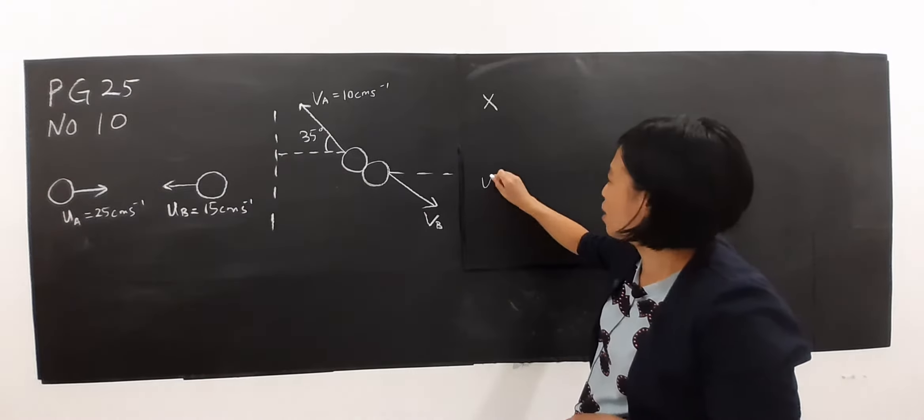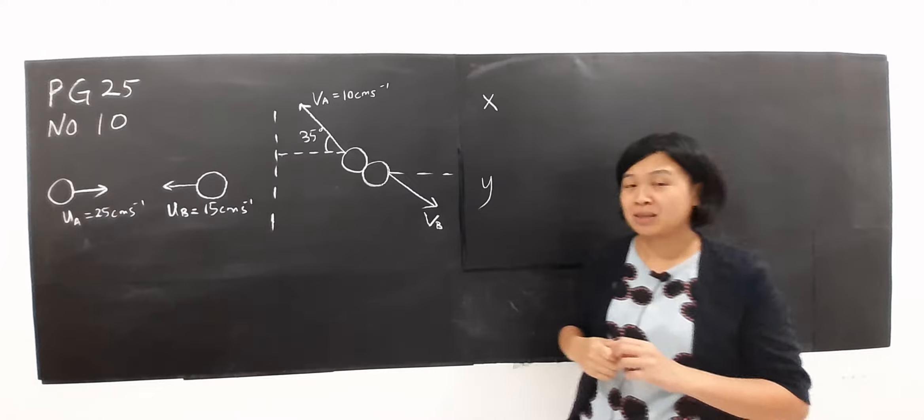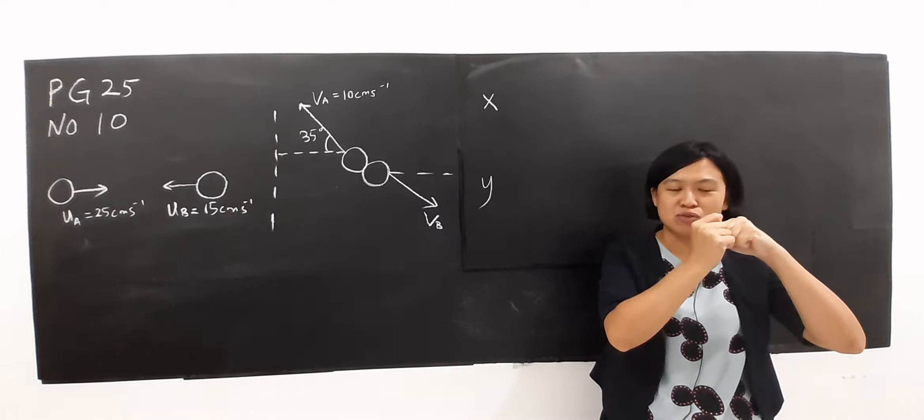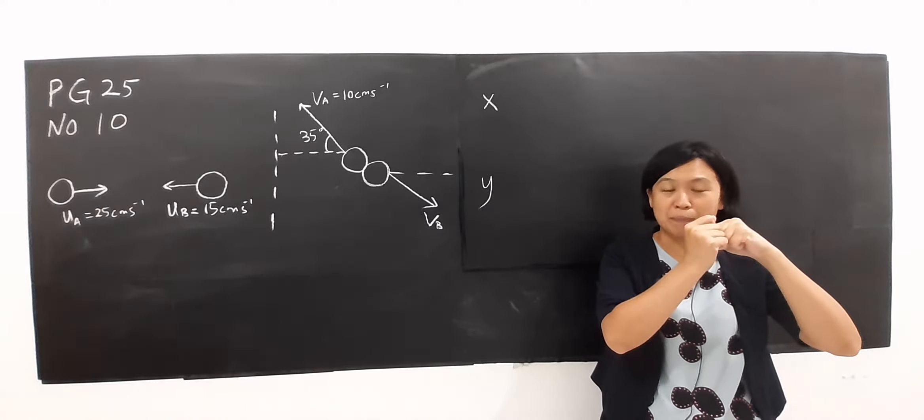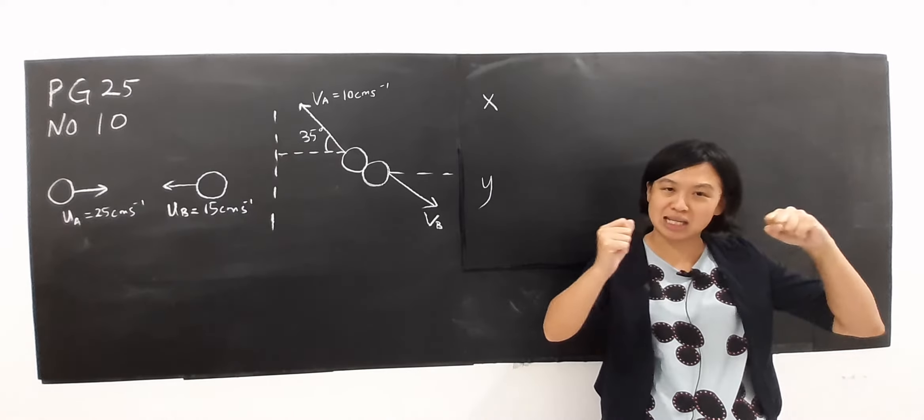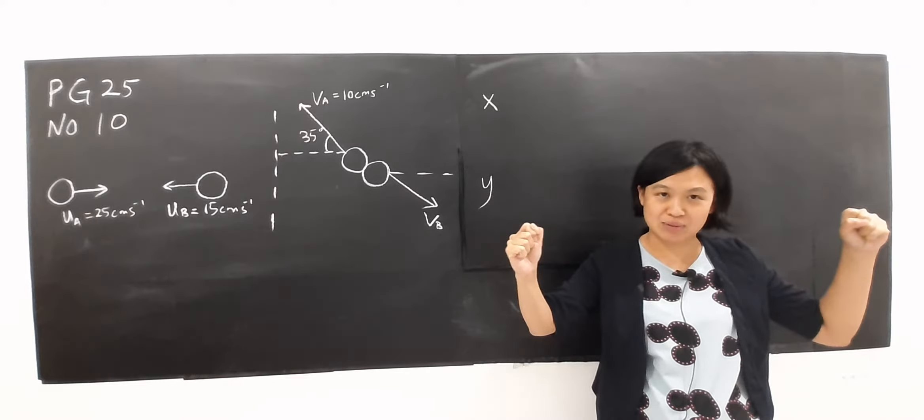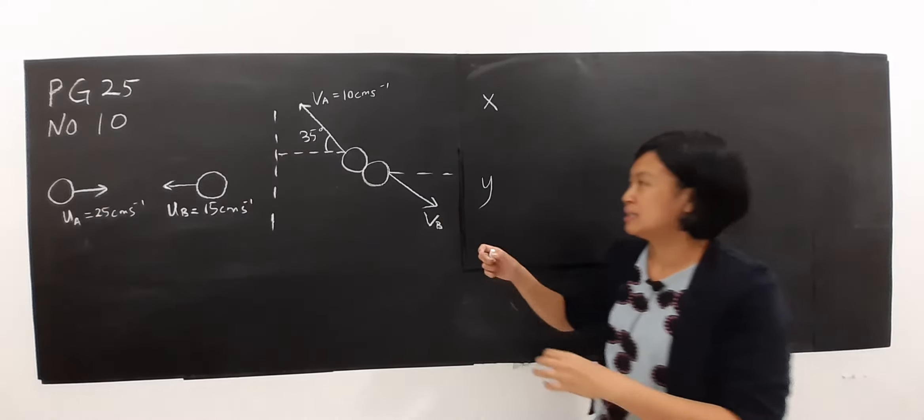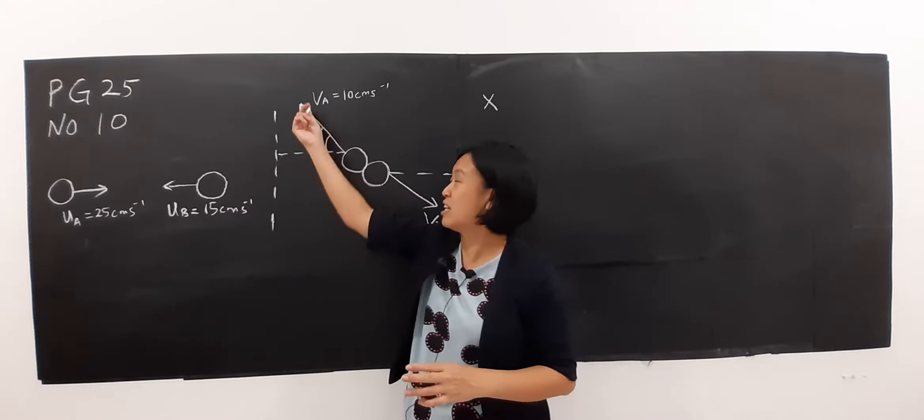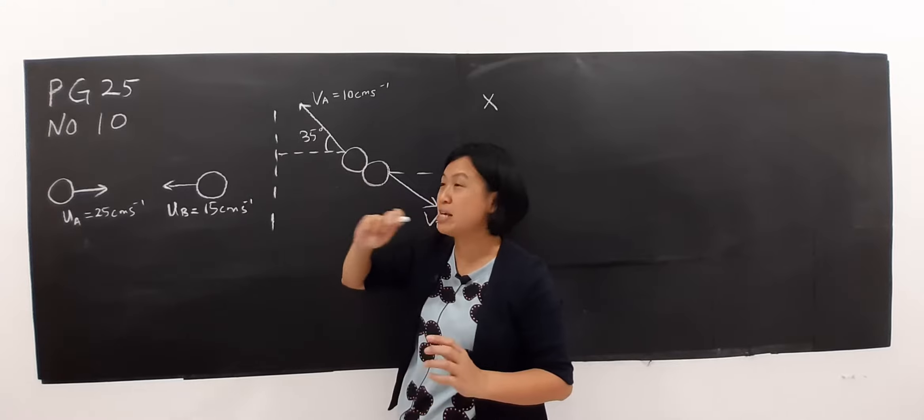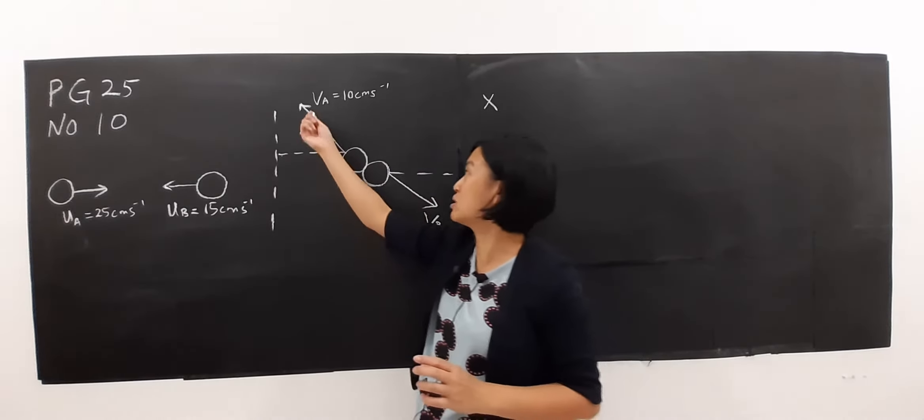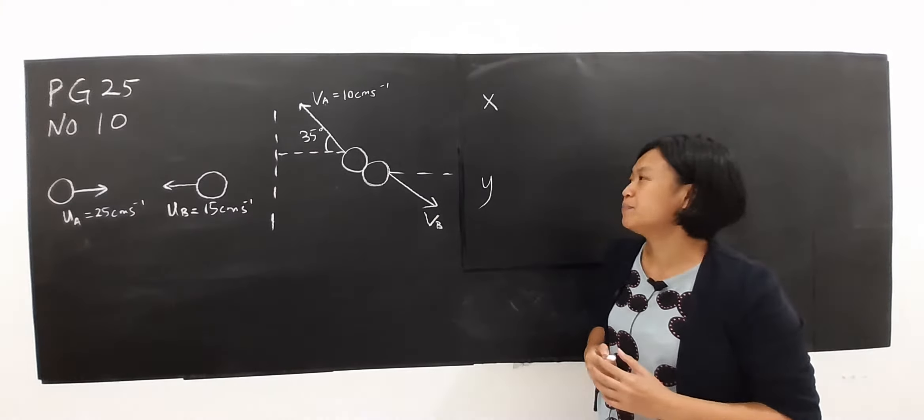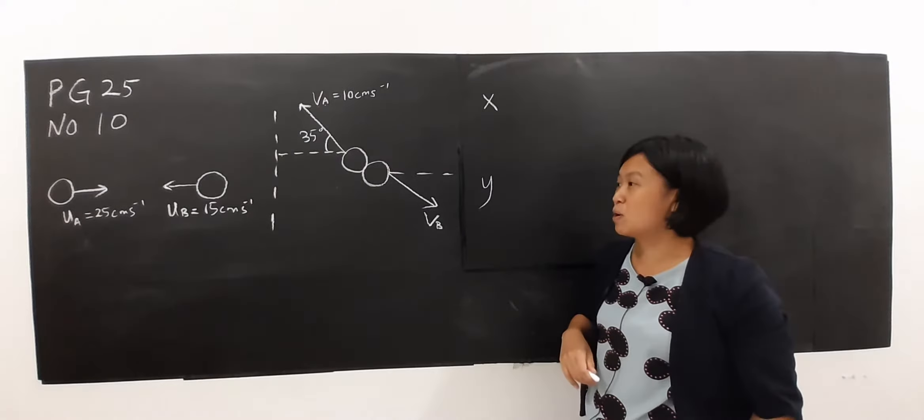In SPM usually after collision the ball actually separates within one dimension along x-axis only. For this case, you find that your velocity actually involves two dimensions because this velocity can be resolved into x and y components.